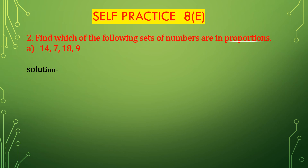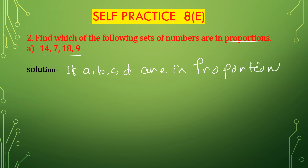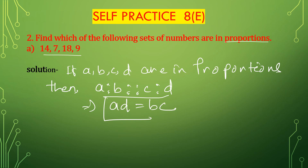We know if A, B, C, D are in proportion, then A is to B is proportional to C is to D, which implies A×D equals B×C. Here, suppose A is 14, B is 7, C is 18, and D is 9. So product of extremes is A×D and product of means is B×C. We check if product of extremes equals product of means.